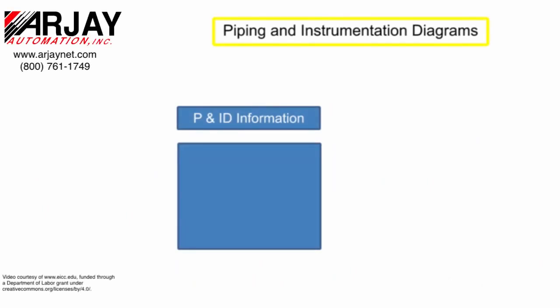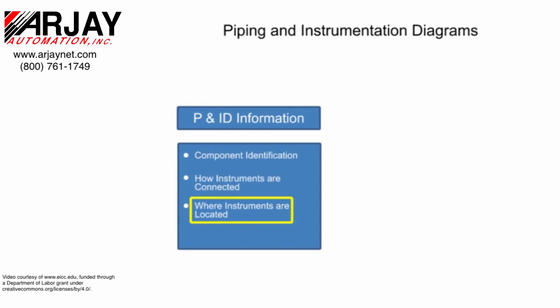Piping and instrumentation diagrams provide information that include component identification, how instruments are connected, where instruments are located, and their function within a process.